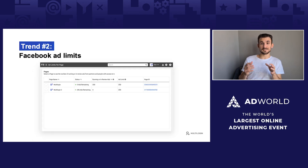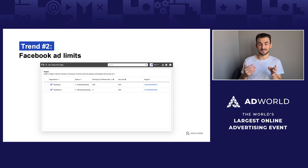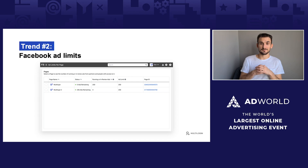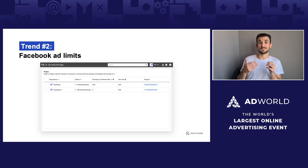Facebook has also introduced limits on how many ads you can run simultaneously per page. If you spend less than $100,000 per year, you can only run 250 active simultaneous ads, and this goes into effect in February 2021. This trend shows that Facebook keeps adding more and more limits to advertisers. So it's a good precaution to have some ad accounts that are isolated from each other for risk diversification purposes, because you never know what will come up next.